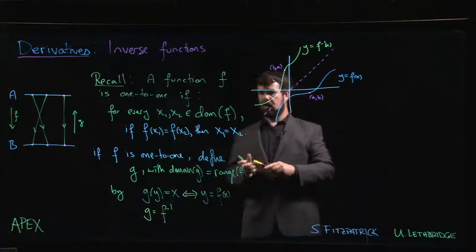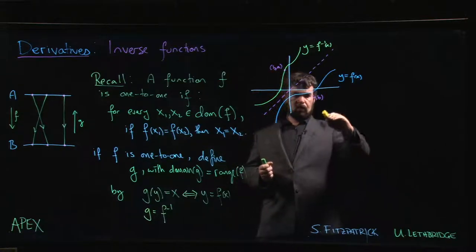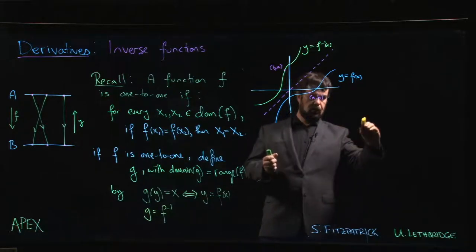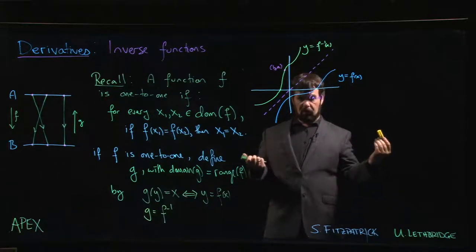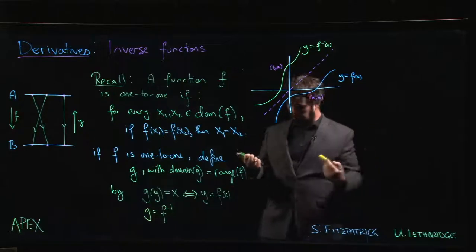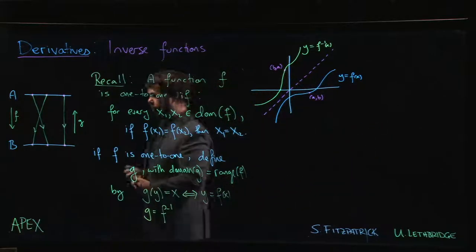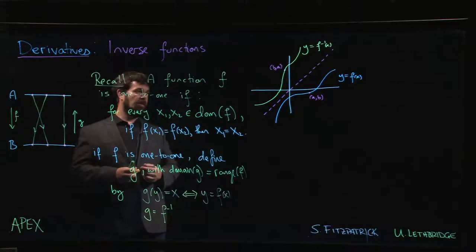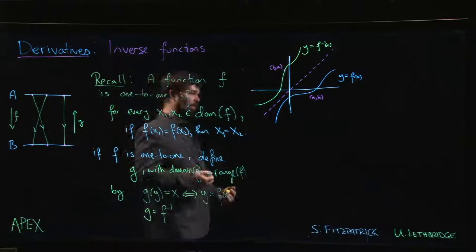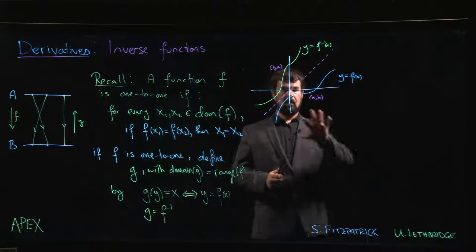So as soon as you have a graph that goes up and then comes back down or goes down and comes back up, your function is not going to be one-to-one because you're going to have two points with the same y value. What we want here is that for any given y value, there's only one x value that realizes it.